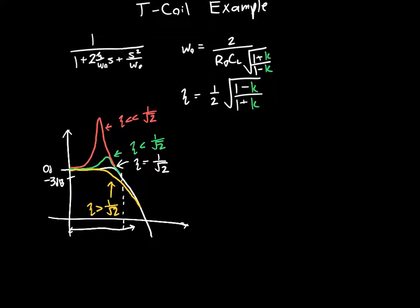If this is 0 dB from where we're starting originally. So typically, we want to design for maximum bandwidth. And this corresponds to a zeta of 1 over square root of 2. So if we're designing our circuit in terms of zeta, then we can rewrite these equations once more, or rather, we can rewrite the equations in terms of k. So if we solve the zeta equation for k,